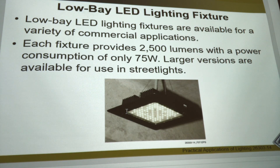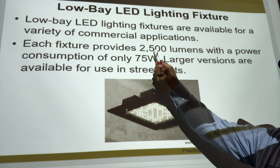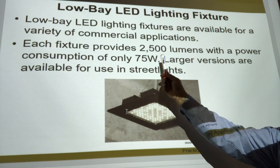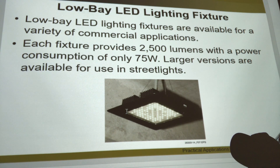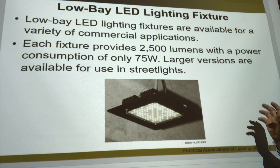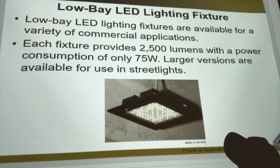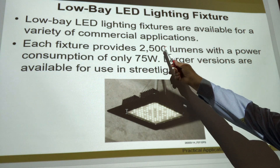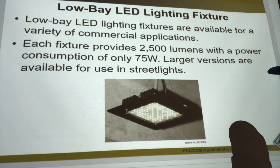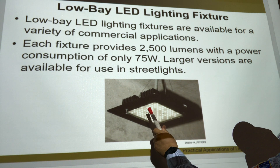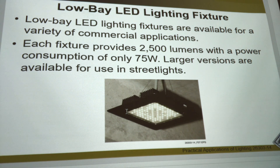Here are some low bay lights. It's 250 to 2,500 lumens consuming 75 watts. Back in the day, a 75-watt incandescent got so hot you could cook on it — if you touched it, you'd burn yourself. Now you get 2,500 lumens out of a 75-watt LED. That's a lot of light.